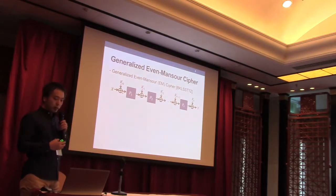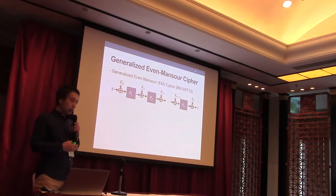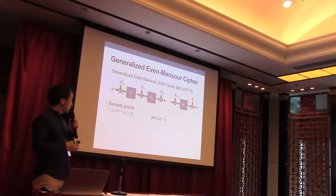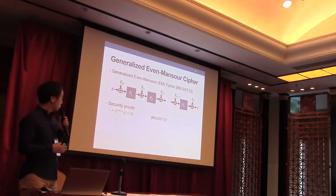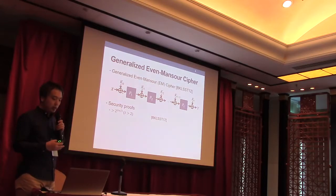In EuroCrypt 2012, Bogdanov et al. generalized the Even-Mansour Cipher to match for r-rounds, and it is proved to be secure up to 2 to the 2n over 3 queries against distinguishing attacks.